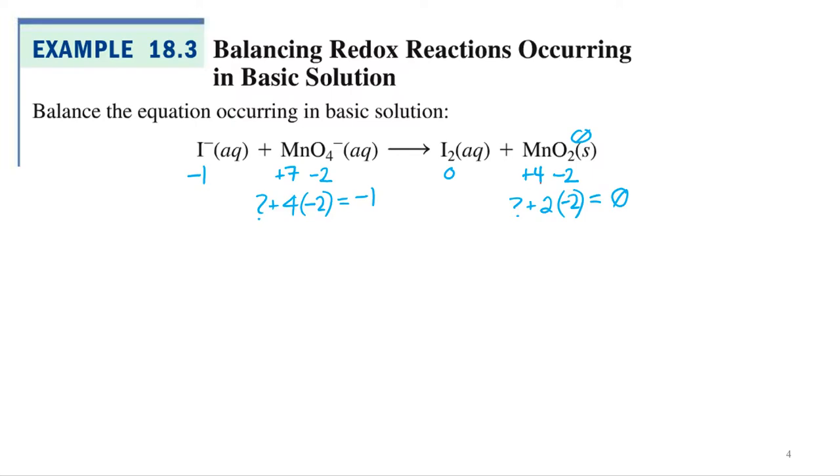All right, so what's my next step? Write out the half reactions? Okay, iodine went from minus 1 to a zero in iodine. So what happened there? Went from a minus 1 to a zero. So that means it had an extra electron. Now it doesn't. So it lost. How many?